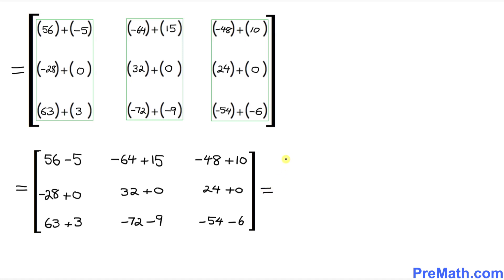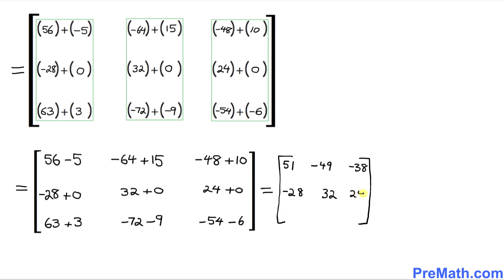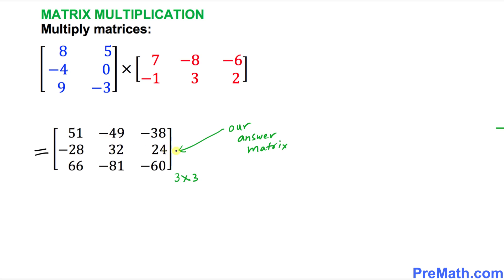We are almost done. Now we add and subtract these numbers to get our answer matrix. 56 minus 5 is 51. Negative 64 plus 15 is negative 49. The next values are negative 38, negative 28, 32, 24, 66, negative 81, and negative 60. This is our answer matrix, which has three rows and three columns.